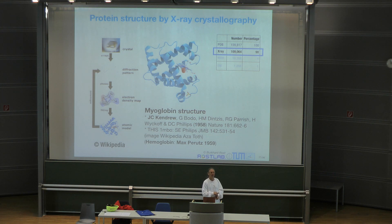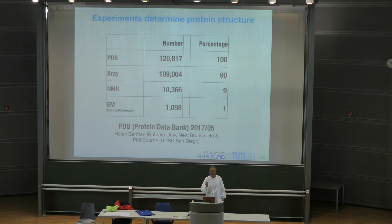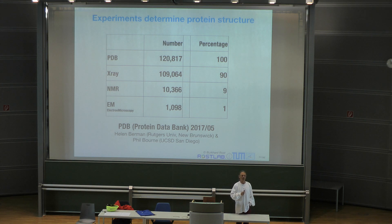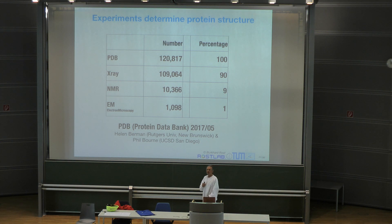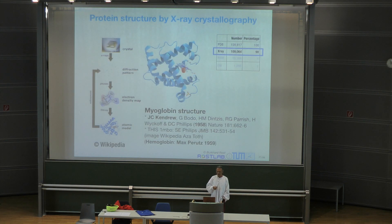There was a question: getting a crystal is not easy for the majority of proteins, but 90% of structures are done by X-rays? Yes — there are 120,000 proteins in the PDB for which we know the three-dimensional structure, and 90% of those are done by X-ray crystallography. But 120,000 is much smaller than 111 million proteins that we know. So 120,000 is much smaller than 111 million, and that ultimately is because for most proteins, it's not that easy.